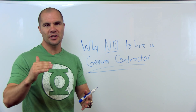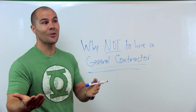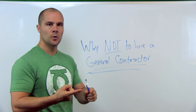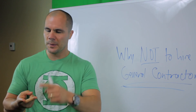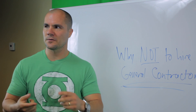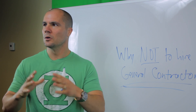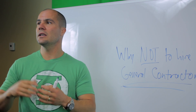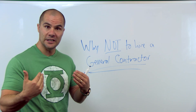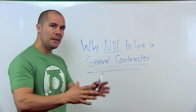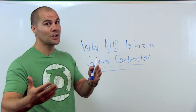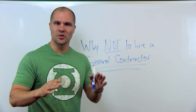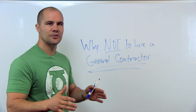Here's why I believe this is not good for you: the general contractor is not going to disclose to you how the project itemizes. They're not going to break down each aspect of the rehab — what the price is for the kitchen, painting, carpet, plumbing, electrical, mechanical, roof, siding, windows. He's just going to give you one price, manage his own subs, take a markup, and do the job.